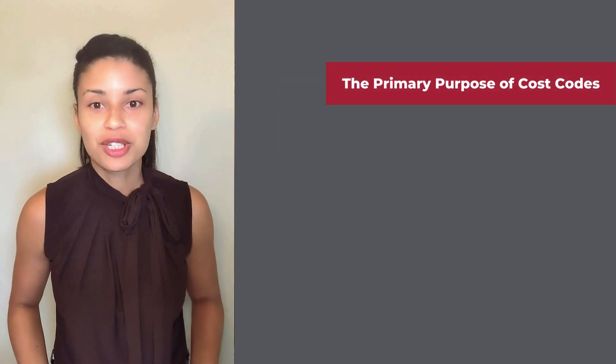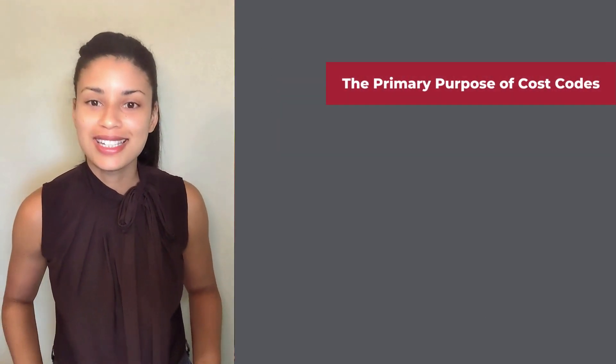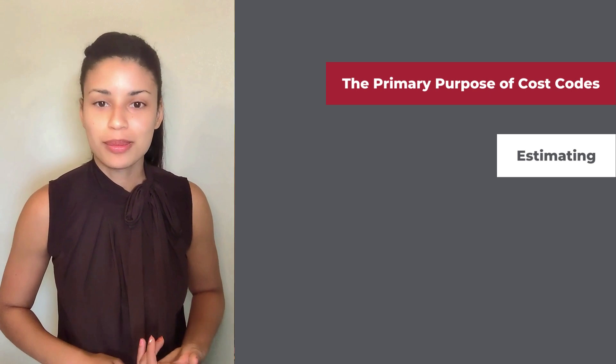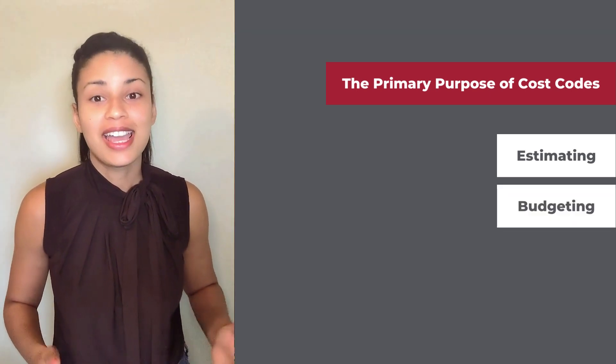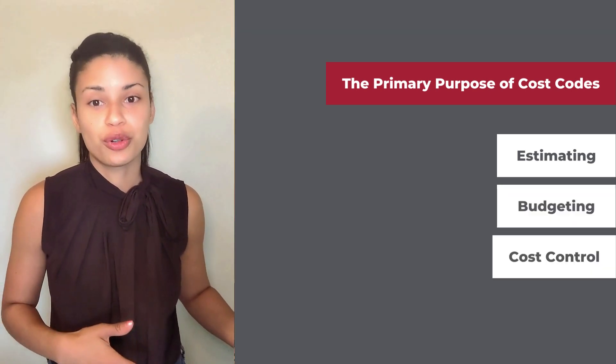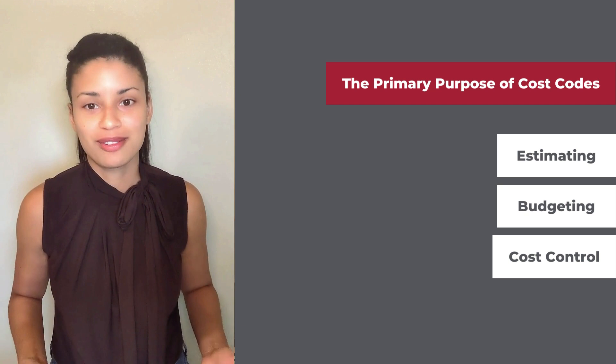The primary purpose of cost codes is to facilitate cost estimation, budgeting, and cost control throughout the construction process. They provide a very clear breakdown of expenses.